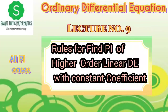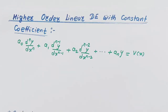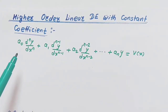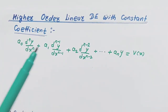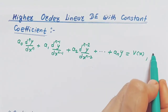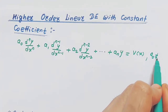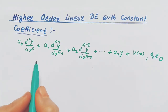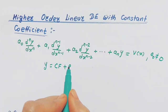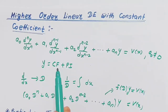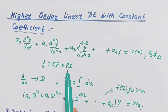Hello everyone. In this lecture we are going to discuss all the cases of Particular Integral, that is PI. As you know, in the last lecture we discussed the complementary function (CF) for a higher order linear differential equation with constant coefficients and degree n, where a0 is not equal to zero. The solution of this differential equation is y equals CF plus PI.